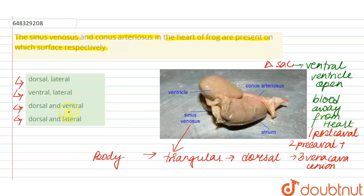You can see the sinus venosus is dorsal but conus arteriosus is not lateral, so this is incorrect. Sinus venosus is neither ventral nor is conus arteriosus lateral, so this is also incorrect.